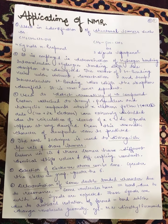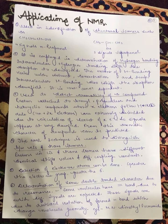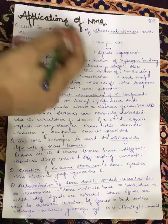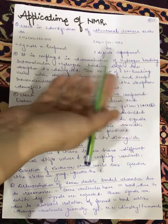First, NMR is used in identification of structural isomers. For example, this is our n-propanol and this is our isopropanol. We can easily find out how many signals we can get.